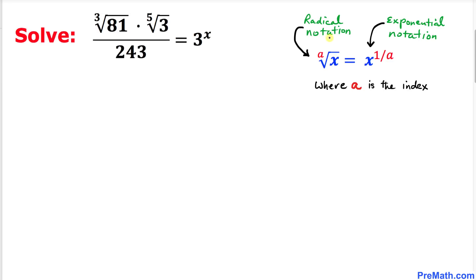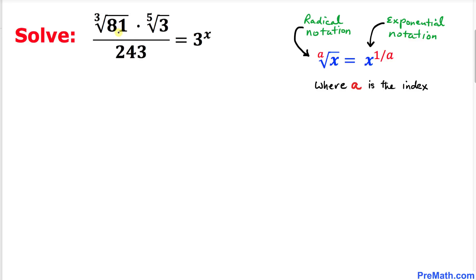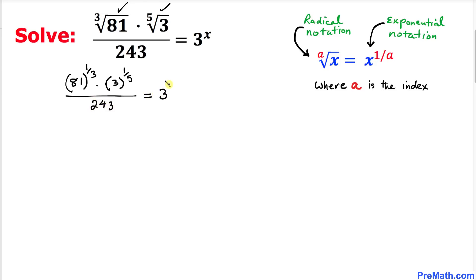Let's recall radical notation as well as exponential notation. Here we have radical notation where 'a' represents the index, and on the right-hand side x to the power 1 over a is our exponential notation. So we can write our given equation as: cube root of 81 as 81 to the power 1 over 3, times fifth root of 3 as 3 to the power 1 over 5, divided by 243, equal to 3 to the power x.